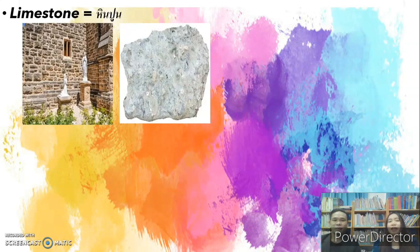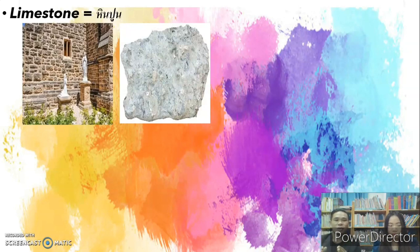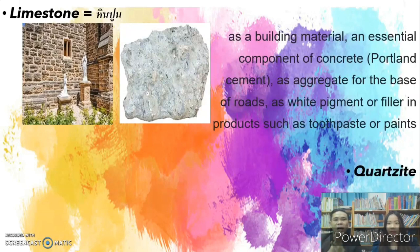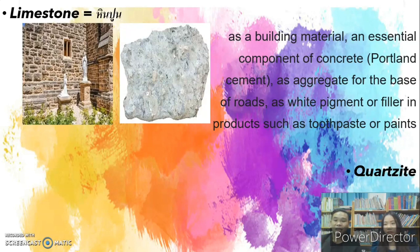Limestone — you can see the limestone; the first one is white and they use it to build walls of the house. Most of them use cement, but this is a kind of limestone. As a building material, limestone is an essential component of concrete, Portland cement, and as aggregate for the base of roads, and as white pigment or filler in products such as toothpaste and paints.